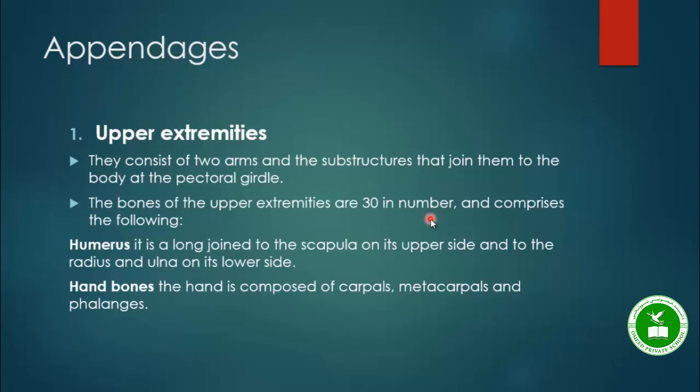The upper extremities include the arm and the hand structure. They are attached to the pectoral girdle, which is composed of the clavicle and scapula. The bones of the upper extremities are 30 in number.